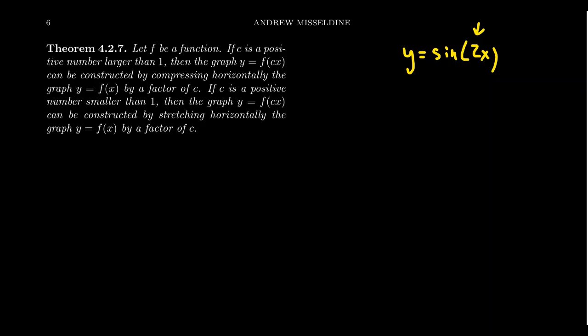Well, for a general function, anything inside of the function, which we call the horizontal zone, anything inside of the function will affect the x-coordinate. Things outside of the horizontal zone, that is, things outside the function, will affect the vertical. So we see that a coefficient inside of a function will actually cause a horizontal stretch or compression.